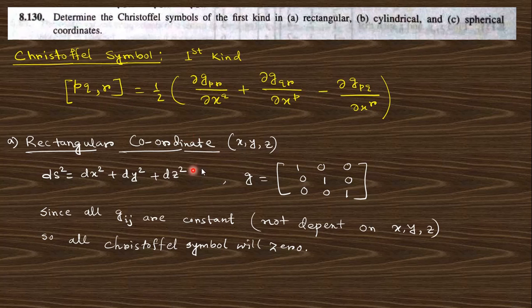In case of the rectangular coordinate system, you know the element arc length square will be like that and the corresponding G matrix tensor will be like that because this will be one. Since there is no variable of X, Y, Z, the partial derivative will all be zero. That is why all the Christoffel symbols will be zero in case of rectangular coordinate system.